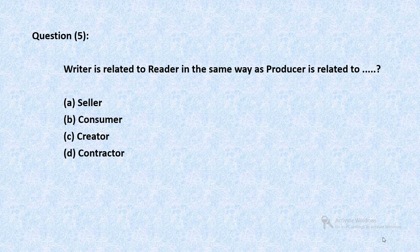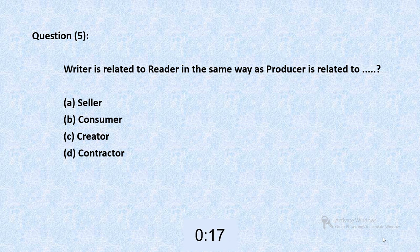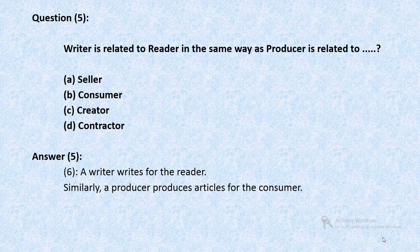Question 5: Writer is related to reader in the same way as producer is related to — seller, consumer, creator, or contractor? The answer is B. A writer writes for the reader. Similarly, a producer produces articles for the consumer.